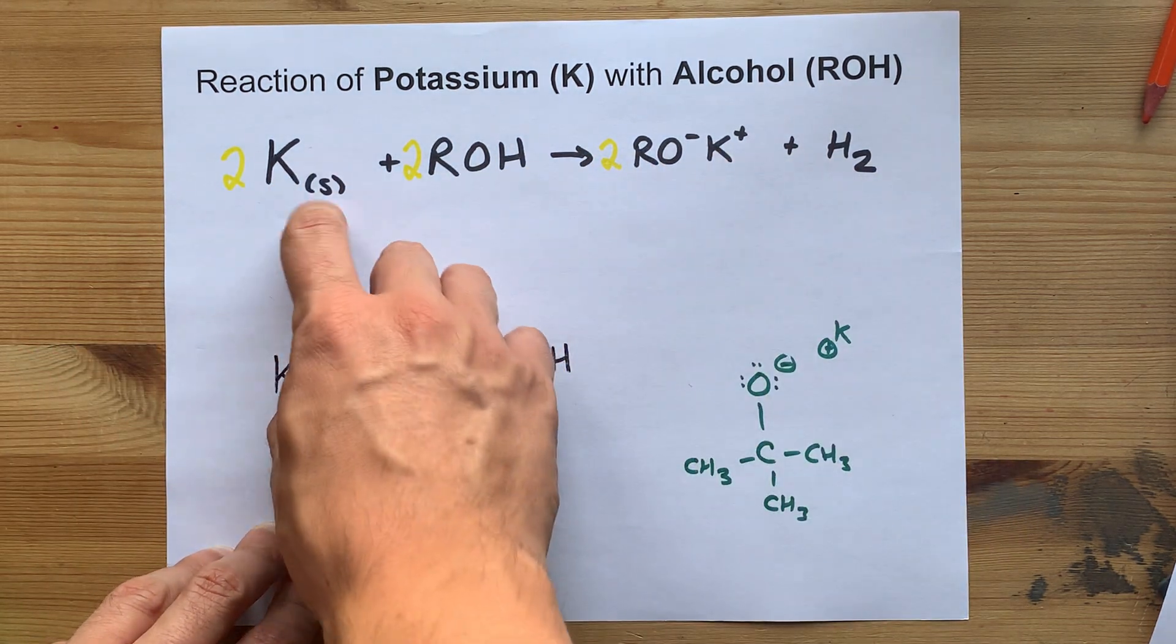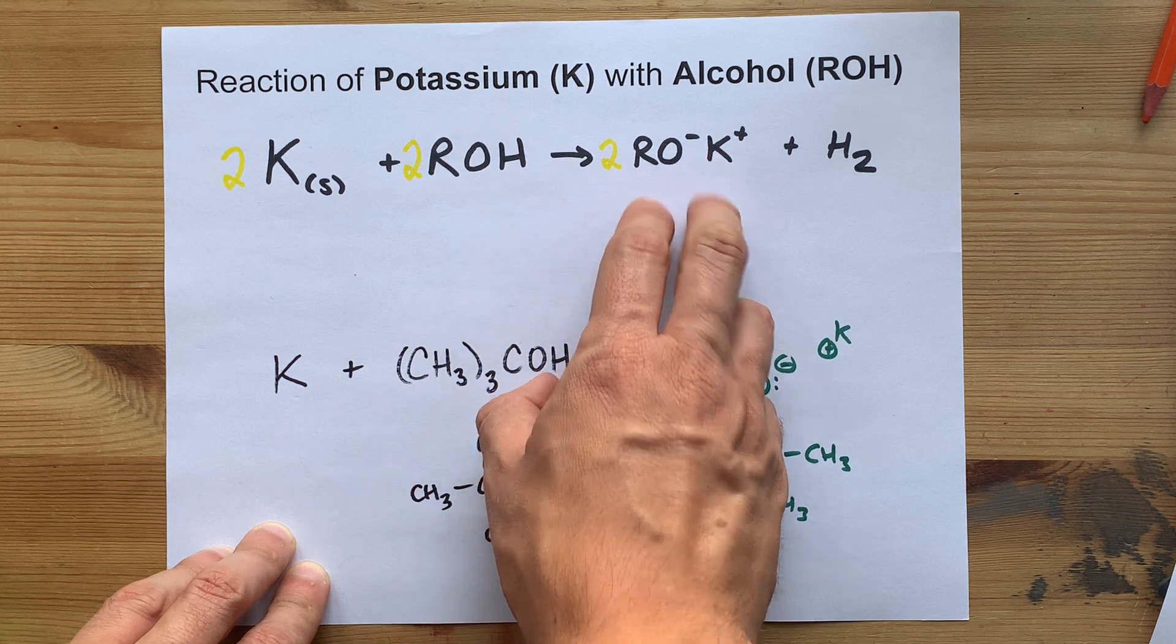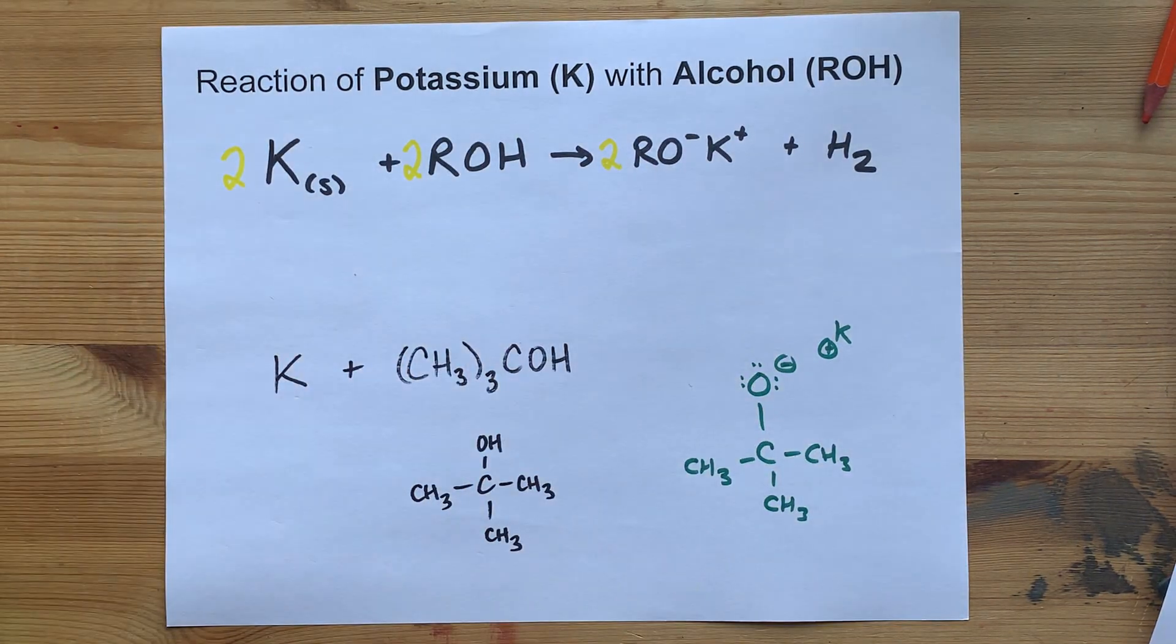The reaction here is that K is displacing H to give you potassium alkoxide. Best of luck.